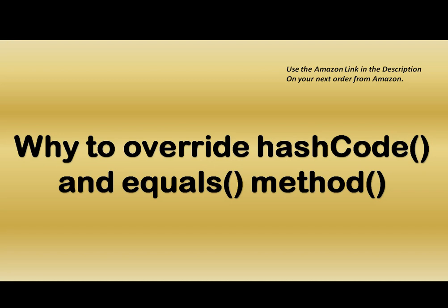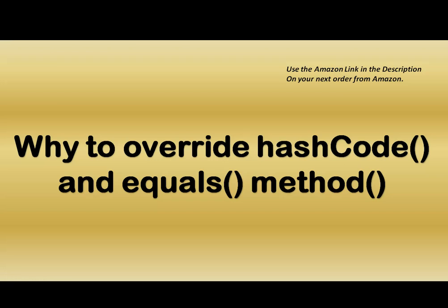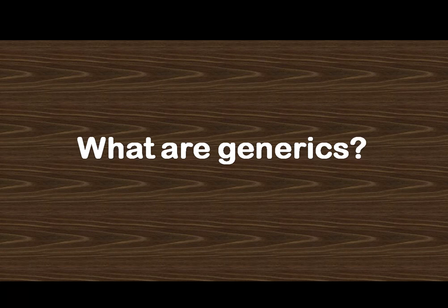We have to explain the contract between the hashCode and equals method, and what will happen if we don't override the hashCode and equals method — especially when we are dealing with HashMaps. The next question is: what are generics? This would be a theoretical definition.